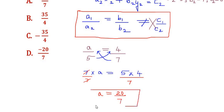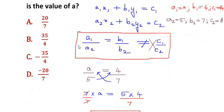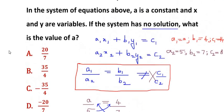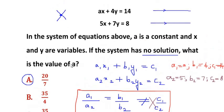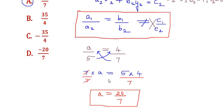This is the value of a we have found as required in the question. The value of a is 20 over 7, which is option A. The key thing to remember is the condition for parallel lines or a system which has no solution. Thanks for watching.